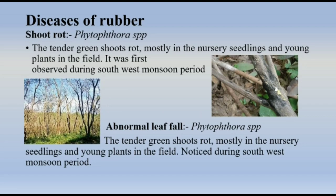Diseases of rubber — Shoot rot (Phytophthora species): The tender green shoots rot mostly in nursery seedlings and young plants in the field. It was first observed during the southwest monsoon period.